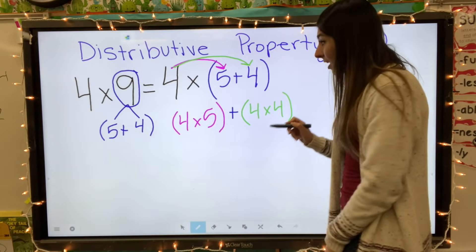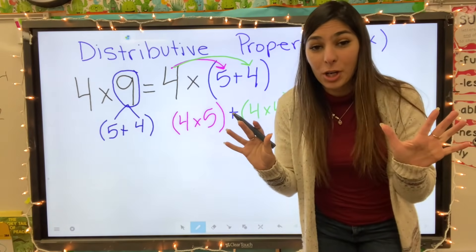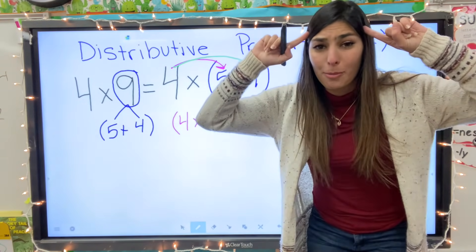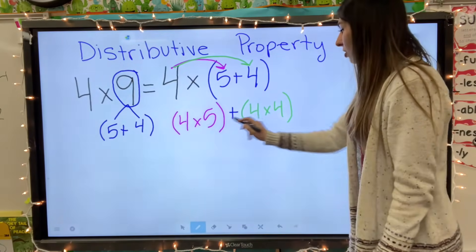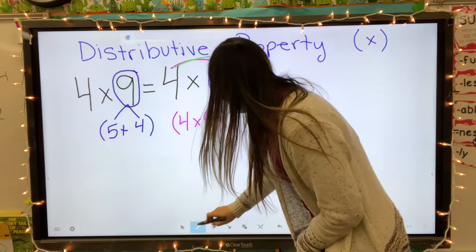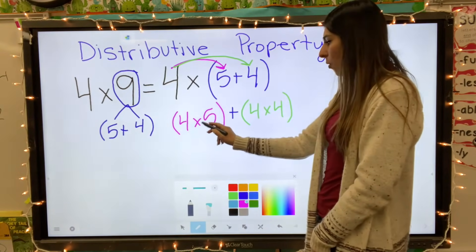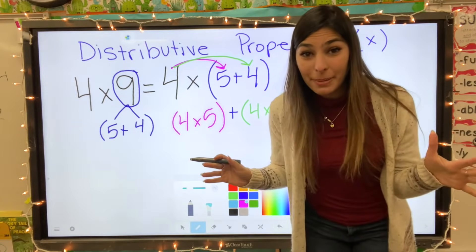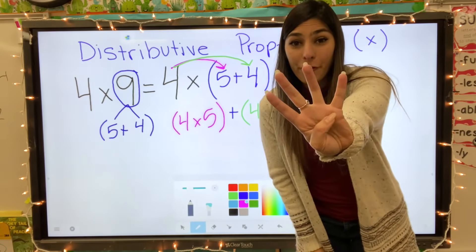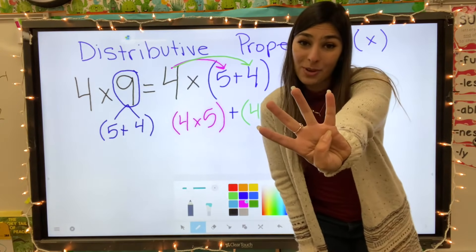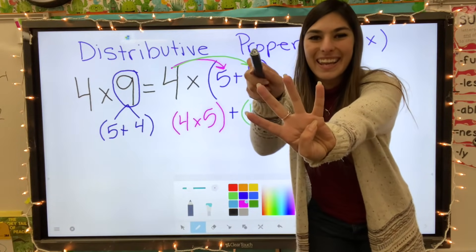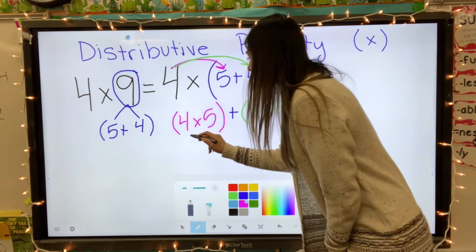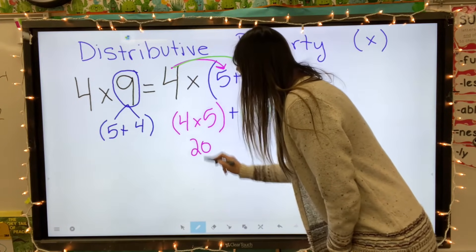Now we have two separate equations that we need to solve, but they are smaller equations with numbers that are easier for my brain. Let's go ahead and solve them. What is four times five? I see that five and I know I can count by fives, so I'm going to count by five four times.